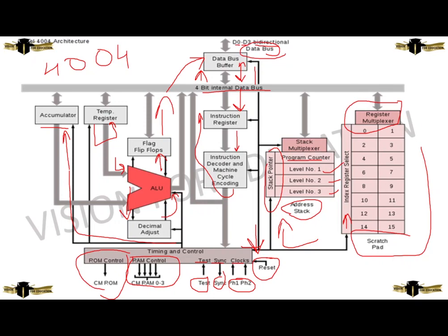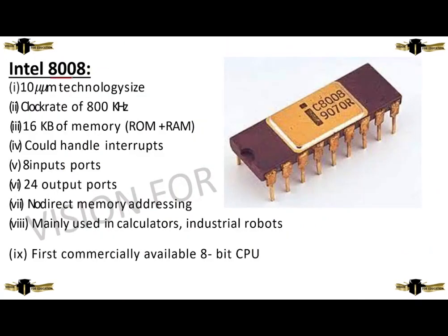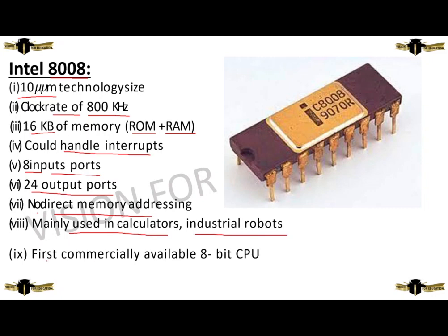Now we are going to discuss about Intel 8008. Its technological size is 10 micro units. Its clock rate is 800 kilohertz. Its memory is 16 kilobytes consisting of ROM and DRAM. It could handle interrupts. It has 8 input portals and 24 output portals. No direct memory addressing is allowed. It is mainly used in calculators and industrial robots. The Intel 8008 is the first commercially available 8-bit CPU.